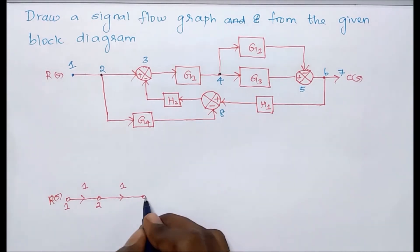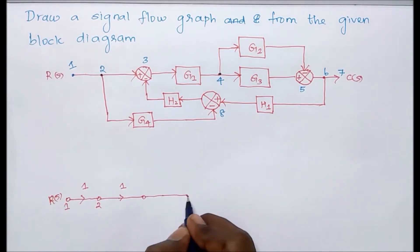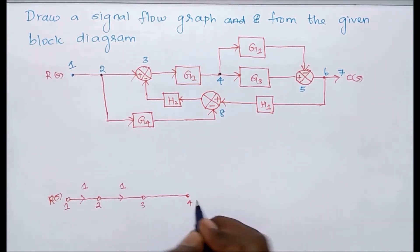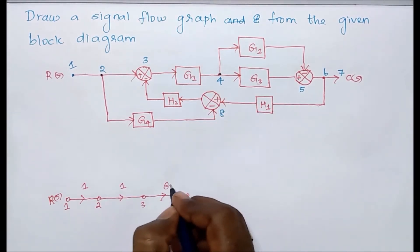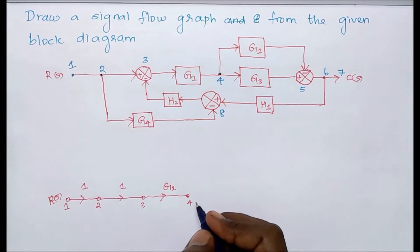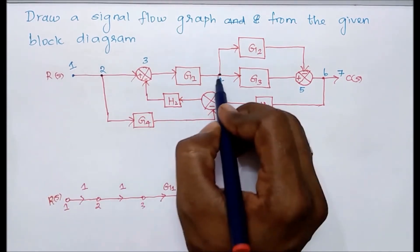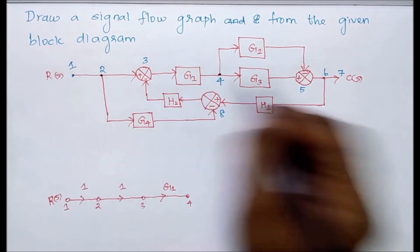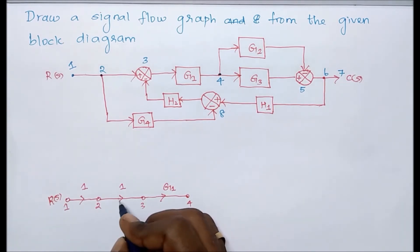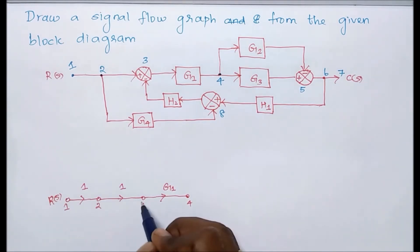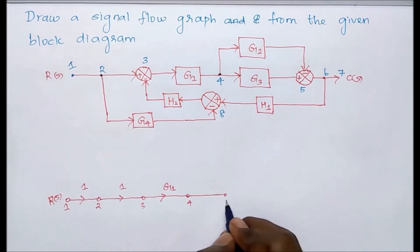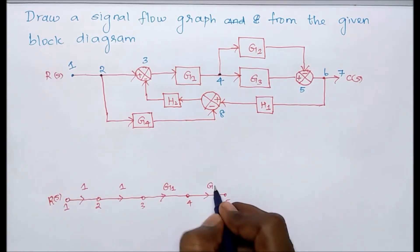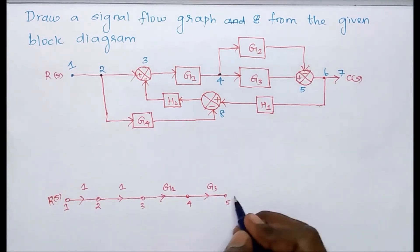Next, from node three to node four, there is a gain — its value is g1. From nodes one to four, the arrow marks are towards the right. So the arrow marks go one to two, two to three, three to four. From node four to node five, there is a gain g3.